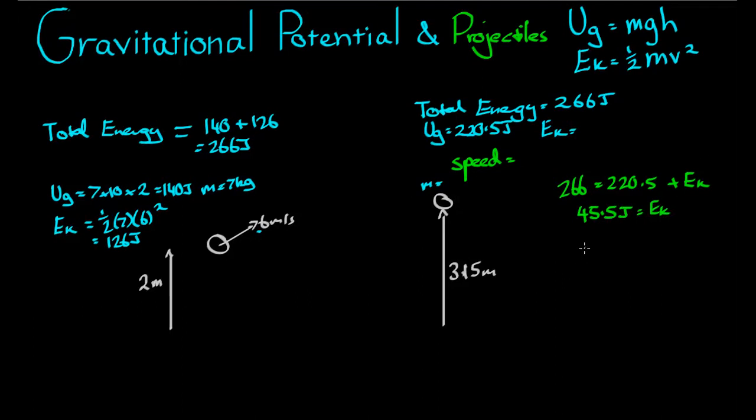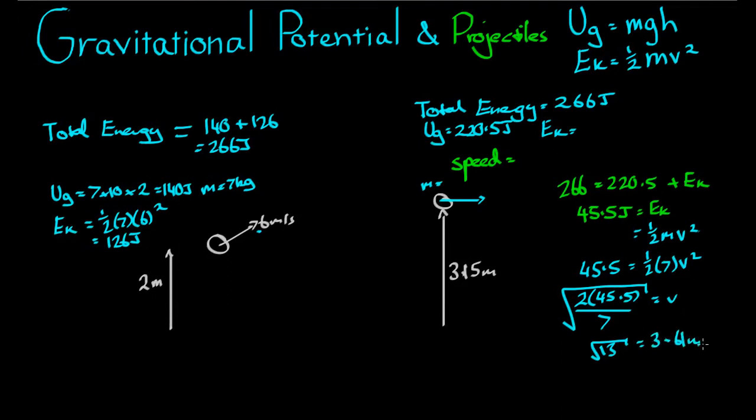And that kinetic energy must equal a half times the mass times velocity squared. This is actually the speed. When you're working with kinetic energy, you always use the speed. And since this is the max height and the object is travelling in that direction there, the horizontal velocity is the speed. So let's work out the speed. 45.5 equals a half m, which is 7, times v squared. So 2 times 45.5 divided by 7, take the square root of that, gives us velocity, which equals the square root of 13, which is 3.61 meters per second.